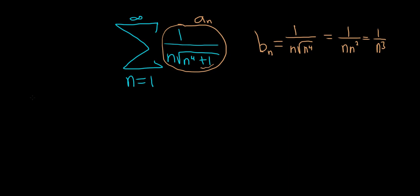The limit comparison test says that if you take the limit as n approaches infinity of a_n over b_n and you get a result which is finite and positive, then the sum of the a's will behave the same as the sum of the b's. Why? Because if this limit gives you a positive number, that means a_n and b_n have the same growth rate. So if you add up their terms, the sum of their terms should also behave the same.